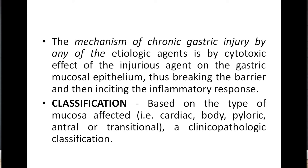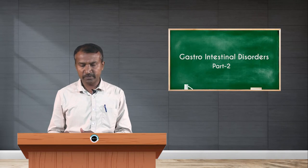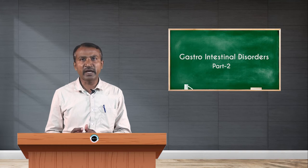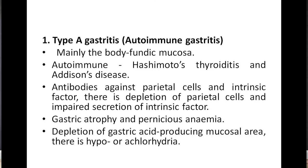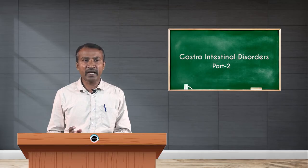Chronic gastritis is classified into types based on the area of mucosa affected: cardiac, body, pyloric, antral, or transitional. Type A gastritis, also called autoimmune gastritis, mainly affects the body and fundic mucosa. It is associated with Hashimoto's thyroiditis and Addison's disease. Antibodies against parietal cells and intrinsic factor lead to depletion of parietal cells, impaired secretion of intrinsic factor, gastric atrophy, pernicious anemia, and hypo- or achlorhydria.